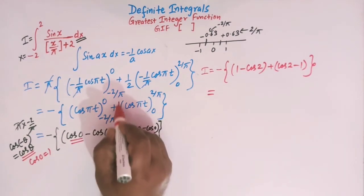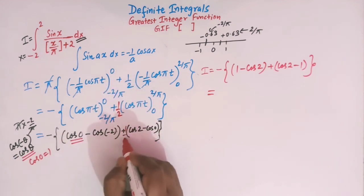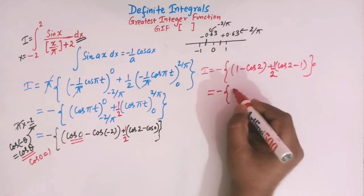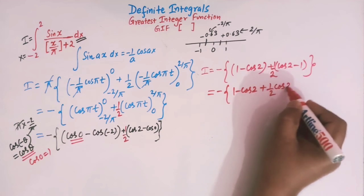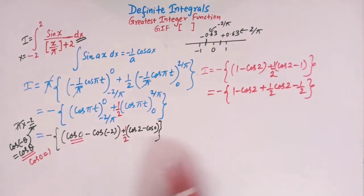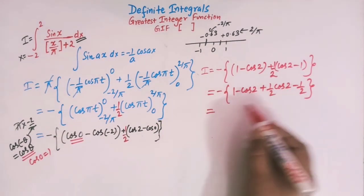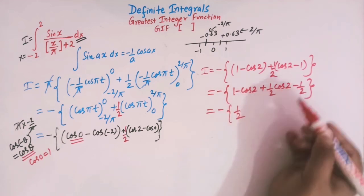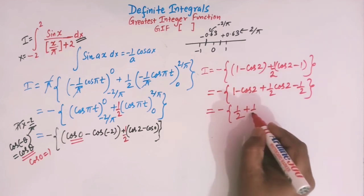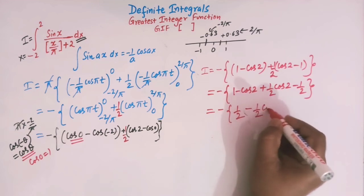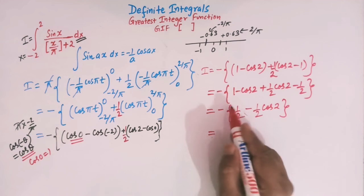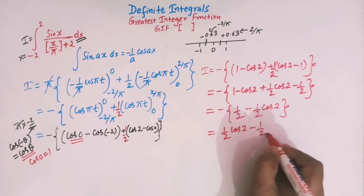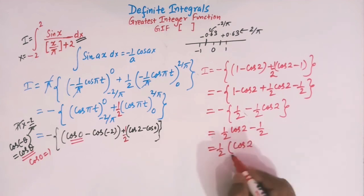Including the 1/2 constant that was factored out, we have: minus 1/2 times (1 minus cos 2) plus 1/2 times (cos 2 minus 1). Expanding: minus 1/2 plus (1/2)·cos 2 plus (1/2)·cos 2 minus 1/2. Taking 1/2 common, this simplifies to (1/2)·(cos 2 minus 1).